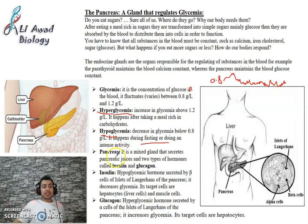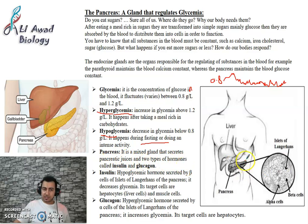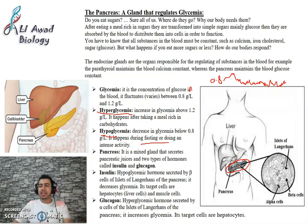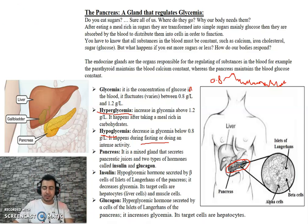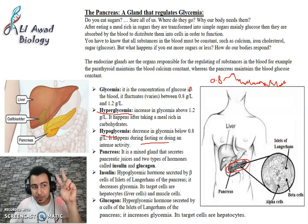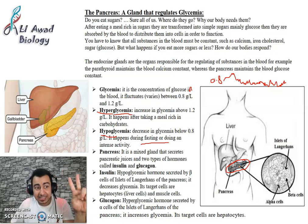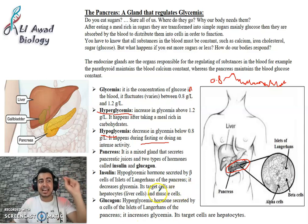The pancreas is a mixed gland that secretes both pancreatic juice and hormones. 98% of the pancreas is exocrine — it secretes enzymes in the pancreatic juice, such as trypsin, amylase, and lipase. However, 2 to 3 percent of the pancreas consists of structures called the Islets of Langerhans.